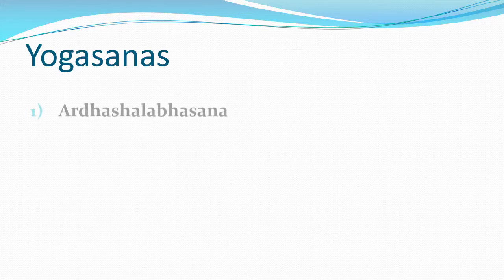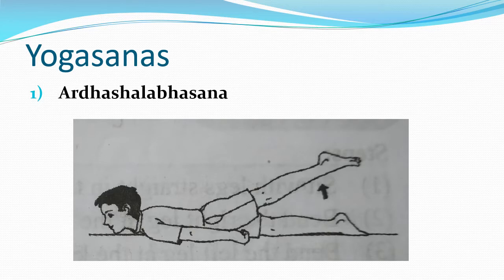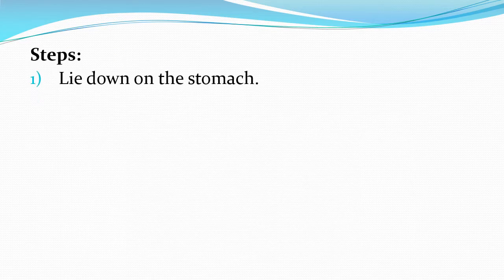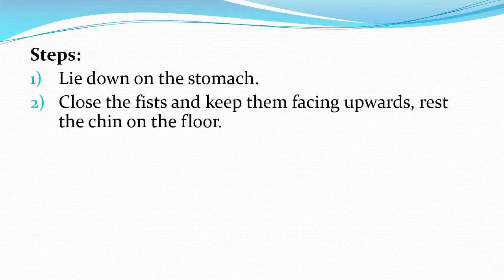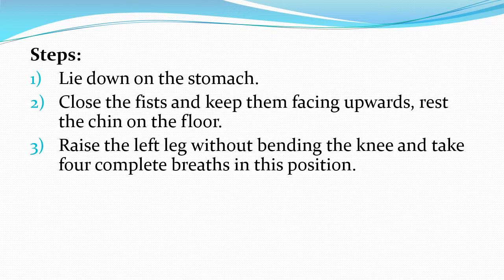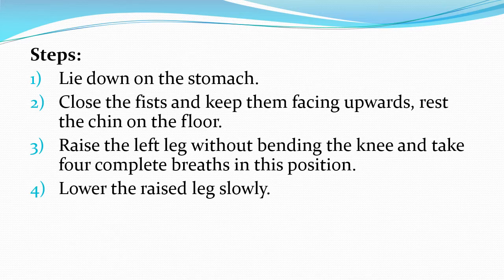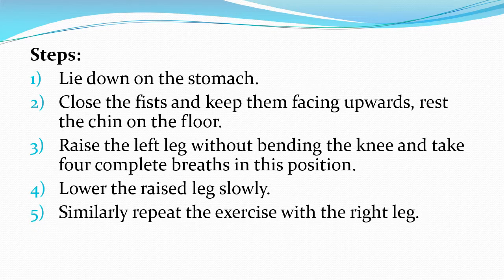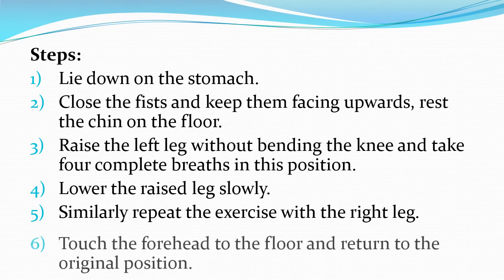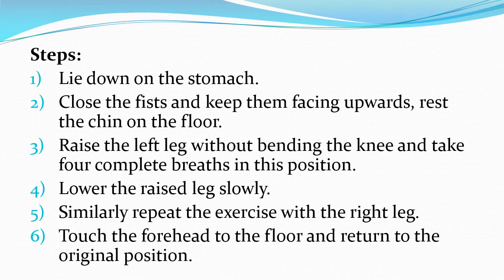First asana: Shalvasana. Steps: Lie down on the stomach. Close the fist and keep them facing upward, raise the chin on the floor. Raise the left leg without bending the knees and take four complete breaths in this position. Lower the raised leg slowly. Similarly, repeat the exercise with the right leg. Touch the forehead to the floor and return to the original position.